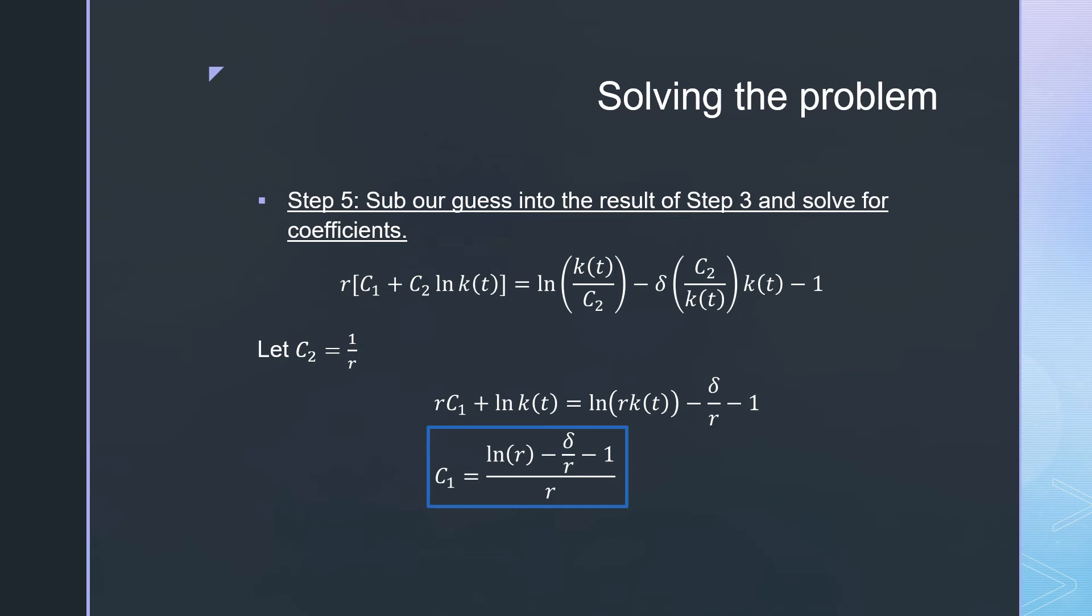Next, we're going to sub our guess into our results for step number three and we're going to solve for those coefficients. Deciding for what our guess is going to be is the same because we want our coefficients to be constants—they're not dependent on anything else.